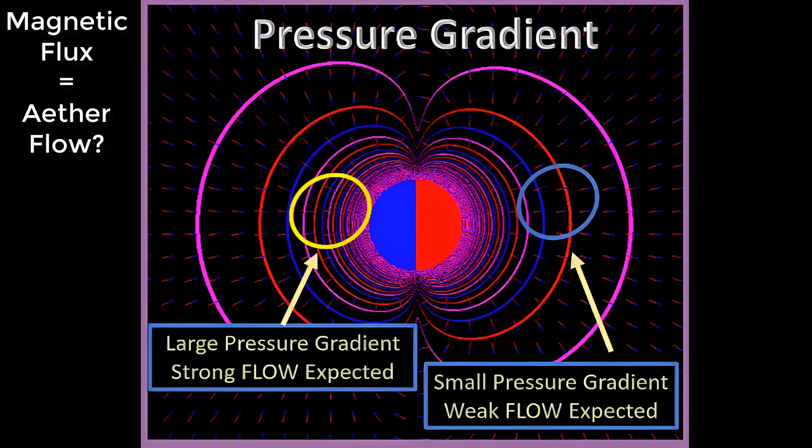Likewise for a magnet, large pressure gradients have closer isopotential lines and strong flow is expected. Small pressure gradients have more spread out isopotential lines and weak flow is expected. Magnetic flux equals ether flow question mark.